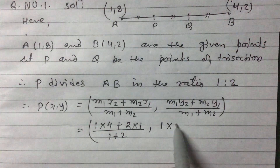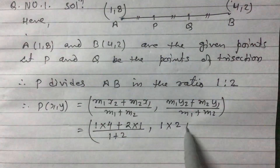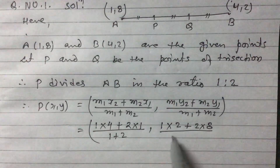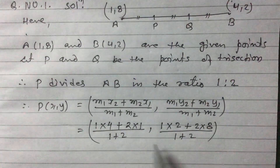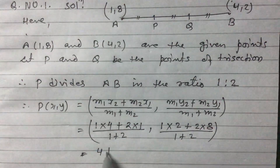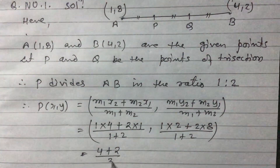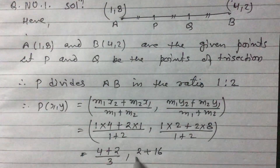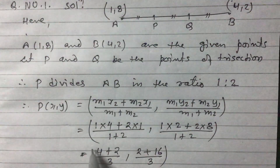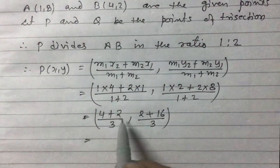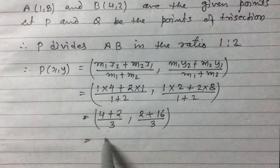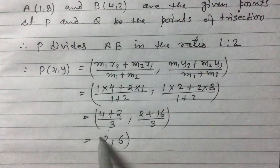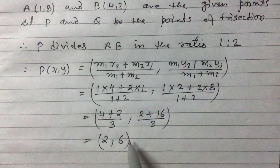M1 is 1 times Y2 is 2, plus M2 is 2 times Y1 is 8, divided by 1 plus 2. This equals 4 times 1 is 4, plus 2 times 1 is 2, divided by 3, comma 2 ones are 2 plus 8 ones are 16 divided by 3. So 4 plus 2 is 6, divided by 3 is 2, comma 16 plus 2 is 18 divided by 3 is 6. Therefore the coordinates of P are (2, 6).